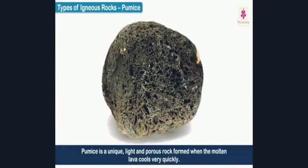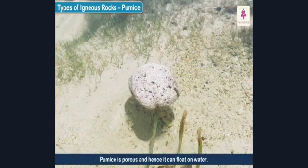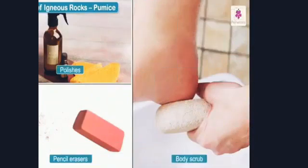Pumice is a unique, light, and porous rock formed when molten lava cools very quickly. During this rapid cooling, gases get trapped inside it and then escape through the pores, thus making it look like a sponge with small holes and pockets inside it.